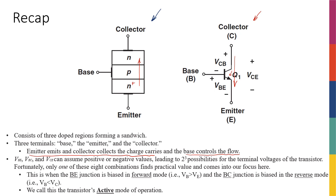Because we have three different terminals, this is new for us — all other elements we have seen in ECS 2200 or ECS 2210 had two terminals, so current and voltage had a one-to-one relationship. With a three-terminal device, the current flowing between different terminals can be dependent on the voltage across different terminals. We have VBE, VBC, and VCE, and each can assume positive or negative values, giving two-to-the-power-of-three different possibilities.